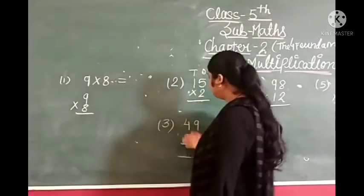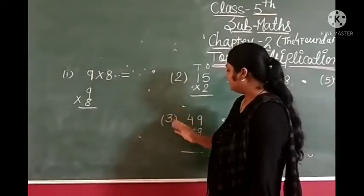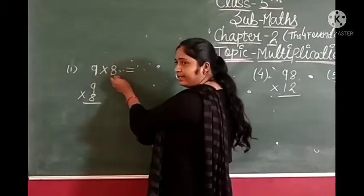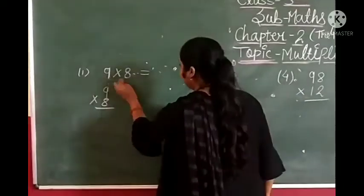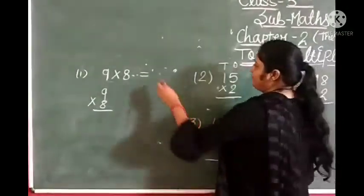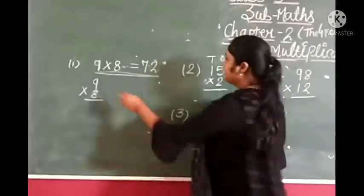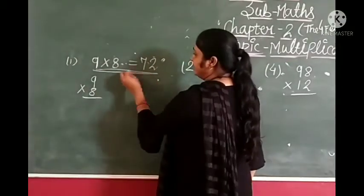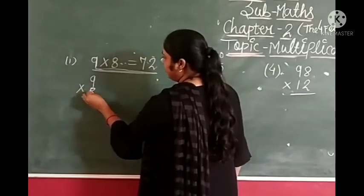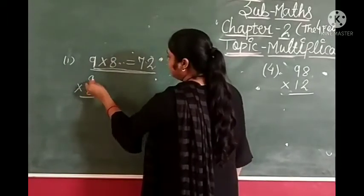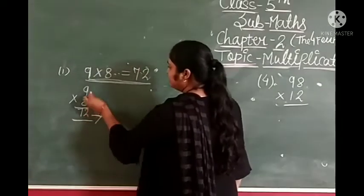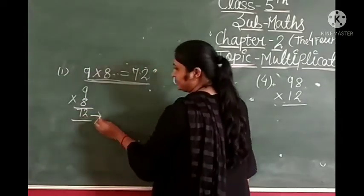Here we have some examples for previous exercise. First is 9 multiplied by 8. We know that 9 eights are 72. This form is known as horizontal form. Here we have 9 multiplied by 8, which means 72. This form is known as vertical form.